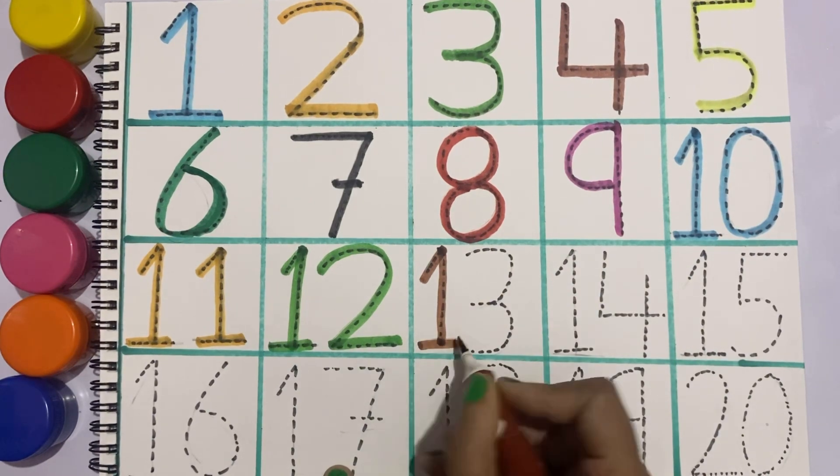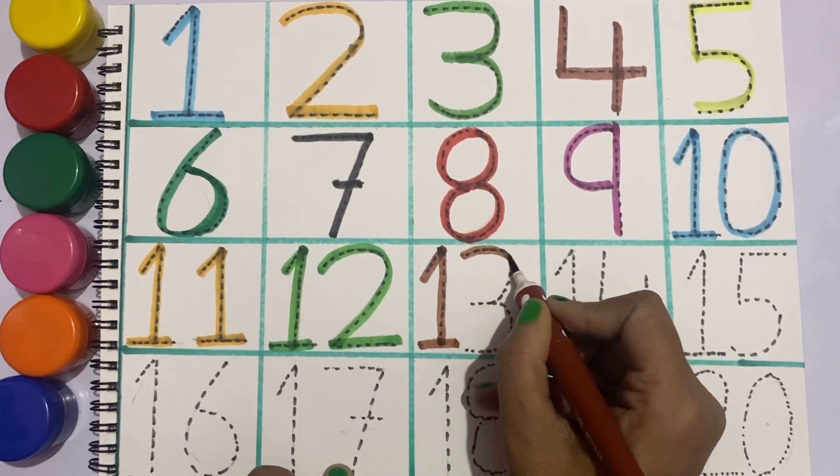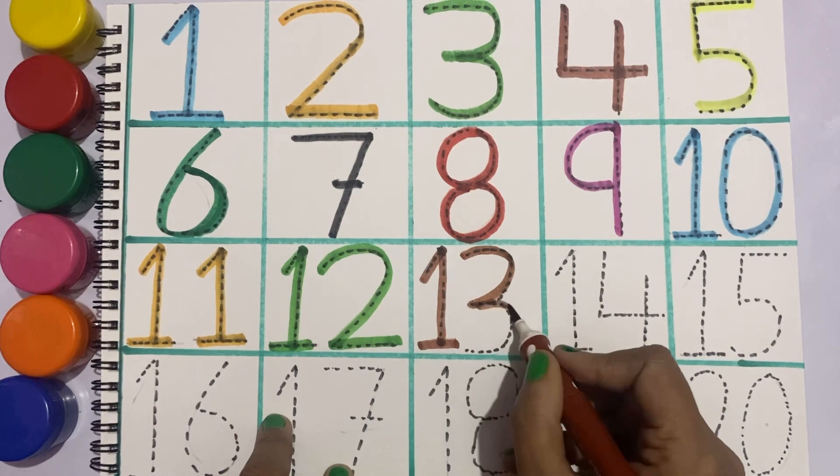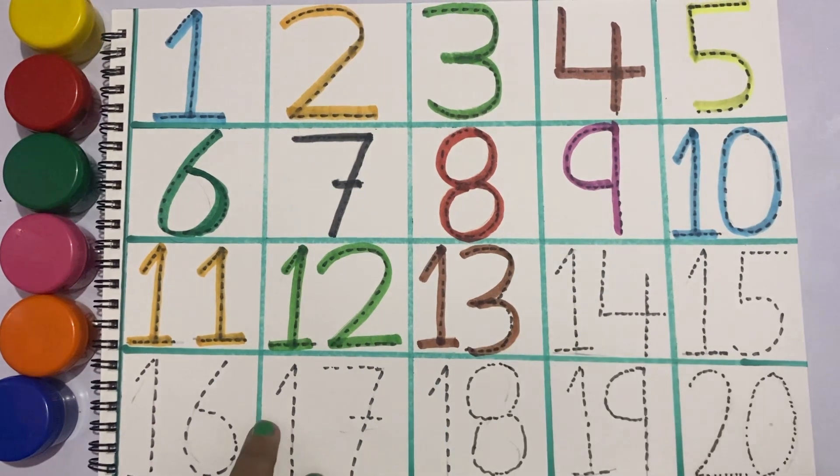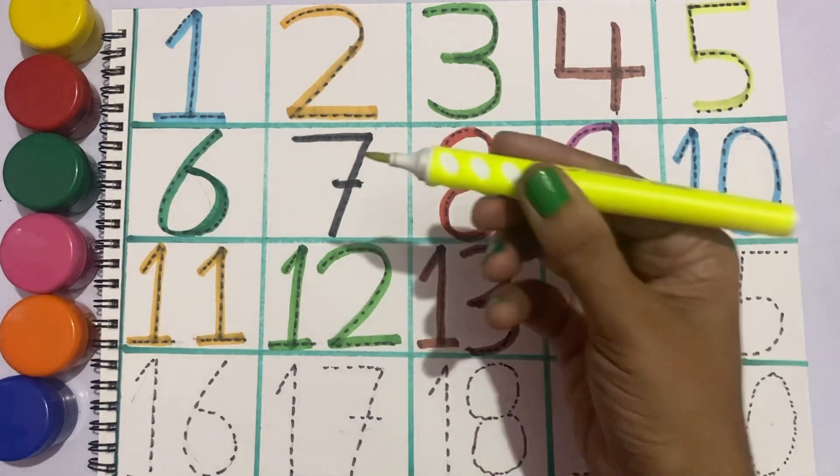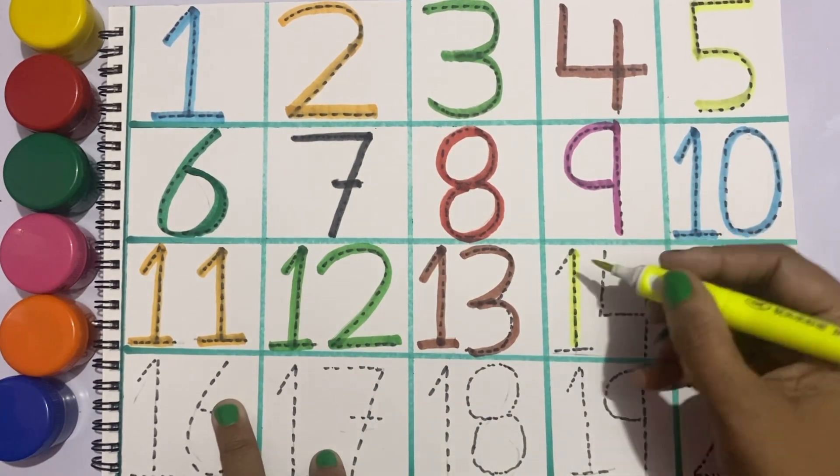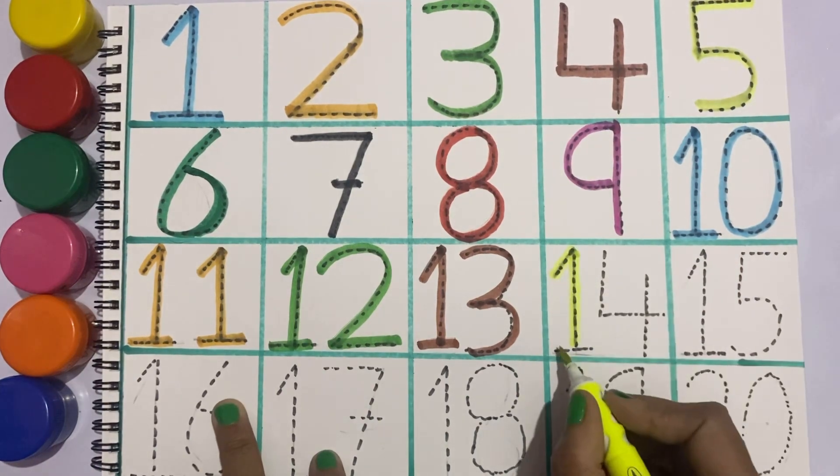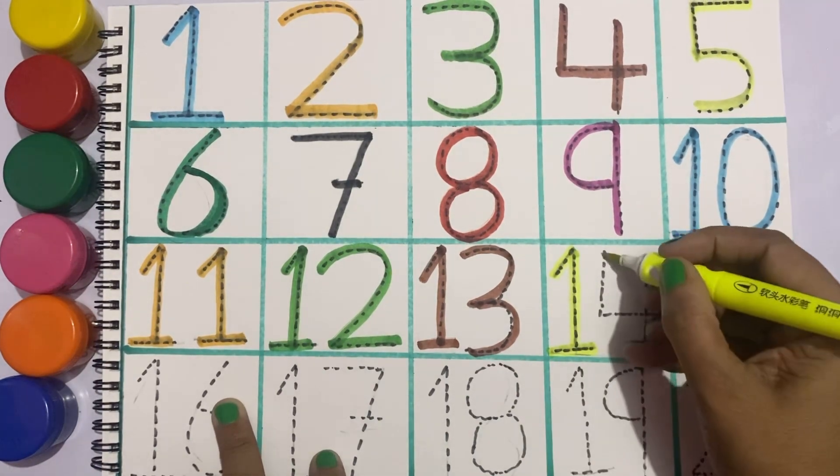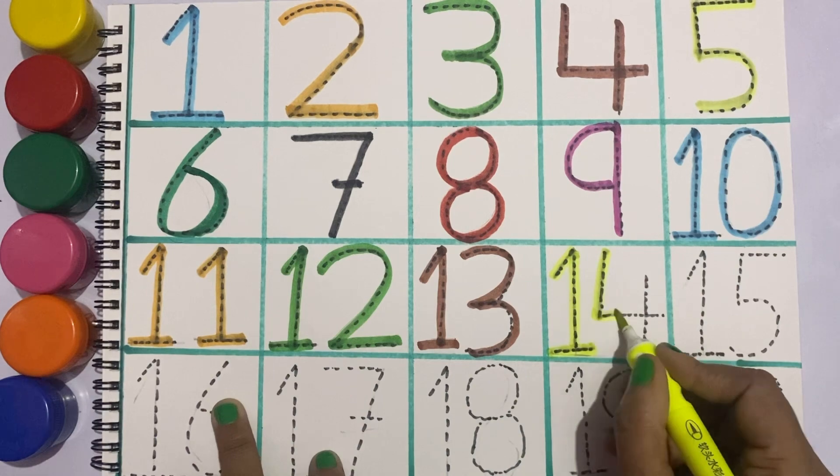brown color, one and three, this is three, thirteen. Now we'll write fourteen with yellow color, one two four, one four, fourteen.